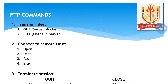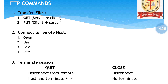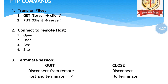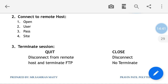FTP commands include GET for server-to-client transfer and PUT for client-to-server transfer. To connect to a remote host, commands like OPEN, USER, PASS, and SITE can be used. There are two types of session termination: QUIT, which terminates the whole FTP session, and CLOSE, which only disconnects but does not terminate. This concludes Chapter 5 Part 2.